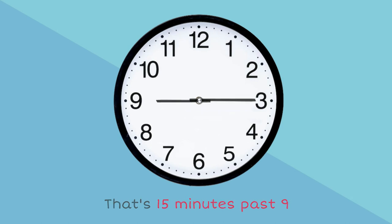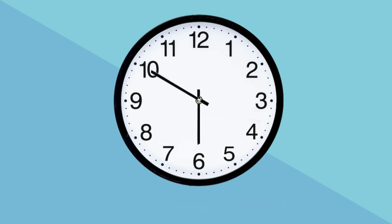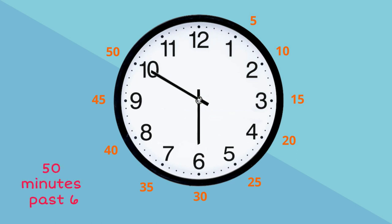And our last example: our long hand is on 10 and our short hand is on 6. Remember, the short hand tells the hour, so that tells us it's 6 o'clock, and our long hand is on 10. Let's count in 5s from 12. That's 50 minutes. That's 15 minutes past 6, or 6:50 on a digital clock. Did you get those correct?